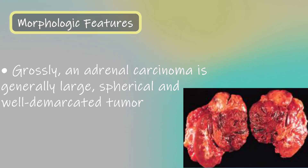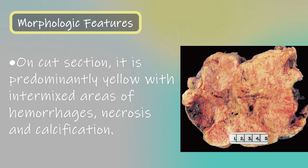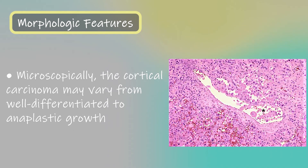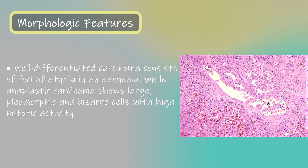Morphologic features. Grossly, an adrenal carcinoma is generally large, spherical and well-demarcated tumor. On cut section, it is predominantly yellow with intermixed areas of hemorrhages, necrosis and calcification. Microscopically, the cortical carcinoma may vary from well-differentiated to anaplastic growth. Well-differentiated carcinoma consists of foci of atypia in an adenoma, while anaplastic carcinoma shows large, pleomorphic and bizarre cells with high mitotic activity.